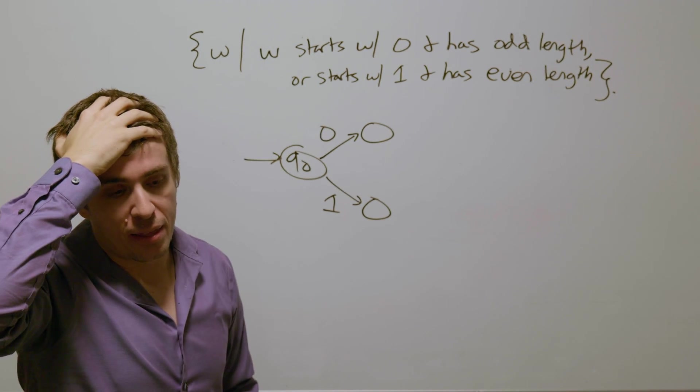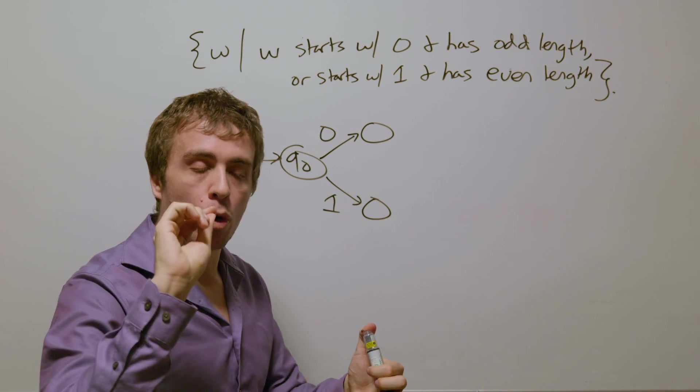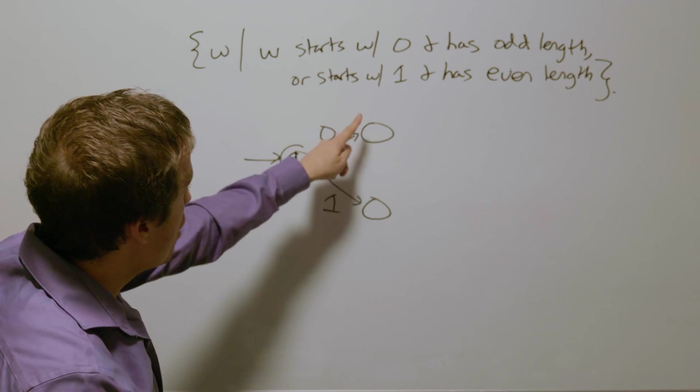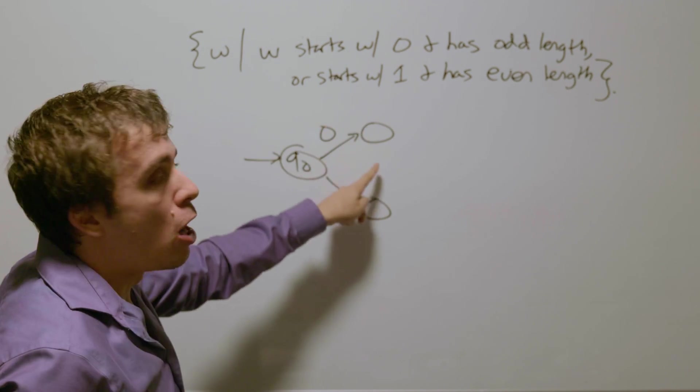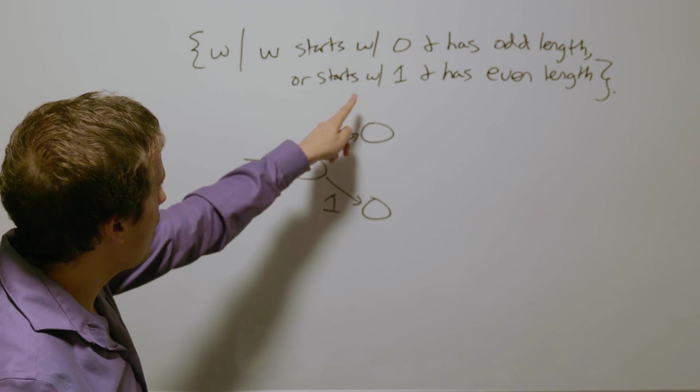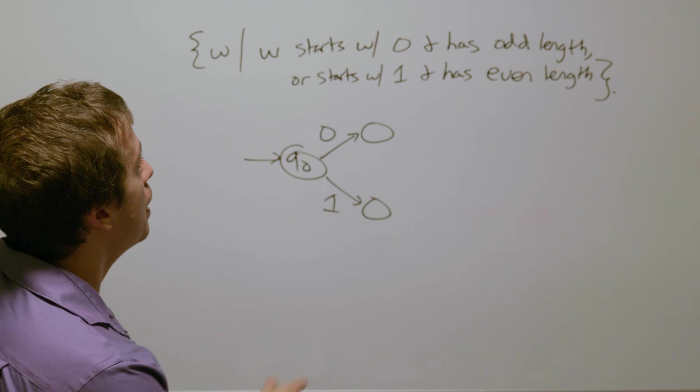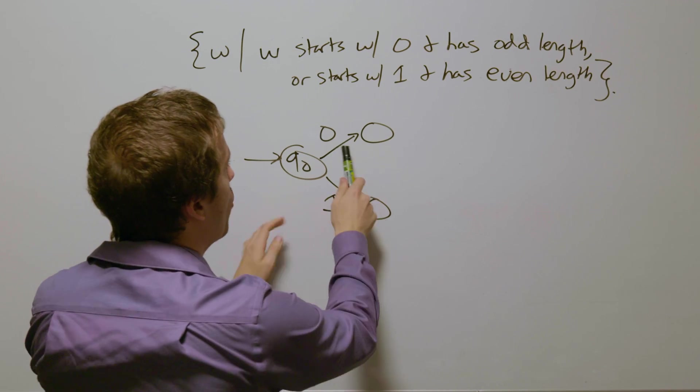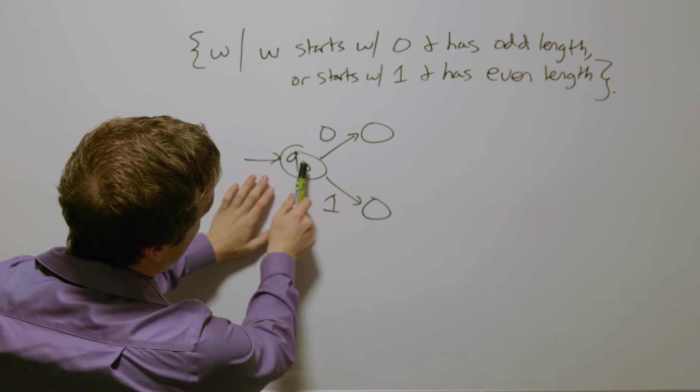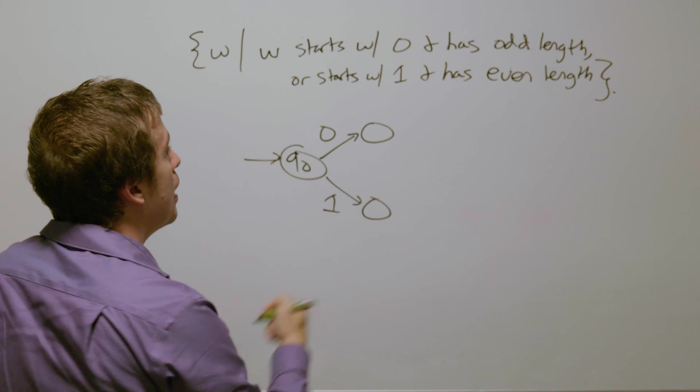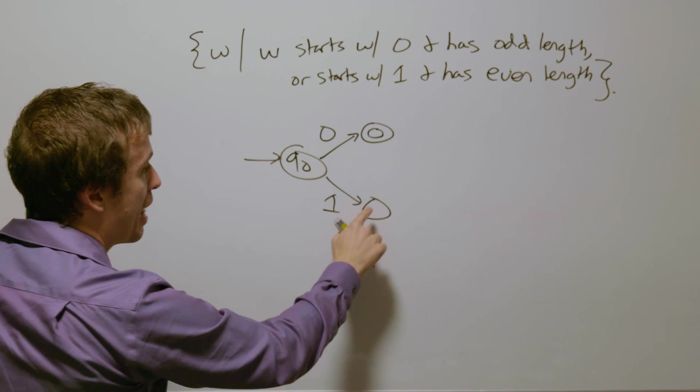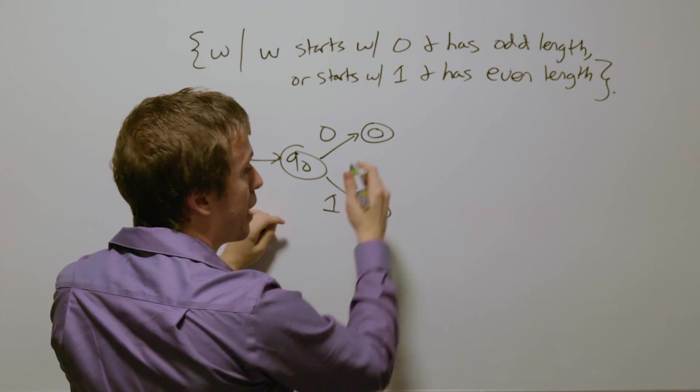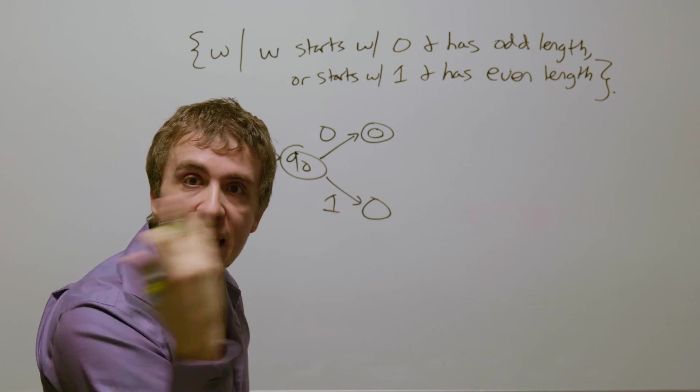Well, if we think about what odd length and even length mean, that just means every character we read is going to switch between odd and even in length. And in either case, we have read an odd number of characters, 1 at this point, once we reach either of these two states. So in the 0 case, this needs to be an accepting state, because we have read an odd number of characters, and for the 1 case, it must not be one. And so therefore, this is going to be marked as a final state, and that's not going to be. But then how are we going to build each of the pieces?